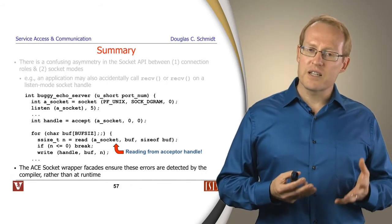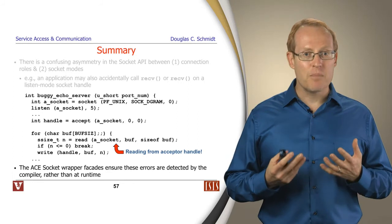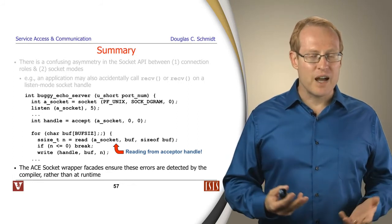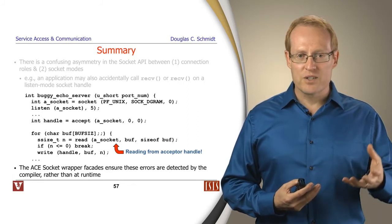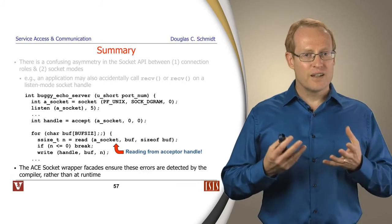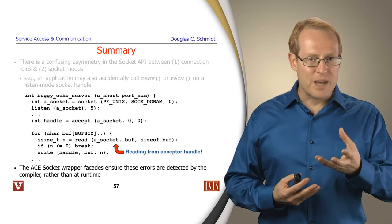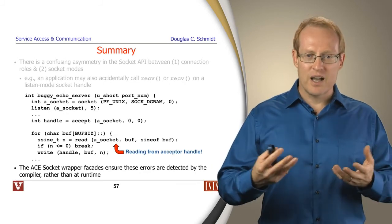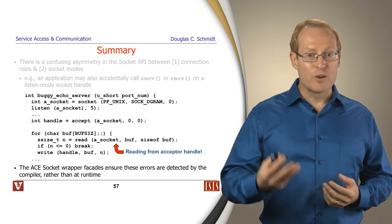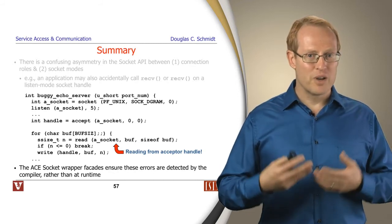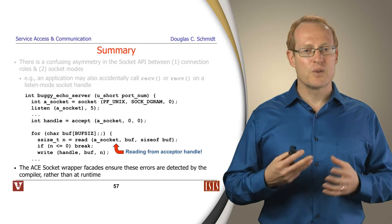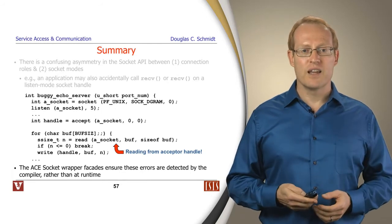One of the nice things about the ACE socket wrapper facades is that they make it impossible to make these kinds of mistakes. You can't do things in the wrong order. You can't accidentally try to do an accept call on a data mode SOCK_Stream. You can't do a read and write call on a listen mode SOCK_Acceptor, and so on. These kinds of things are minimized in your design.